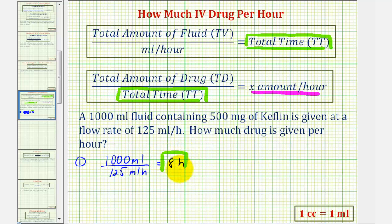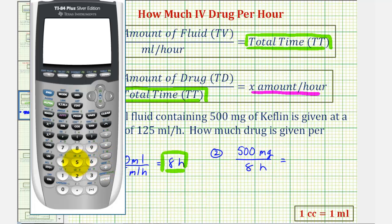And now that we have the total time, we can determine the amount of the drug given per hour. We'll take the total amount of drug in milligrams, which is 500 milligrams, and divide by the total time in hours, which we now know is 8 hours. This quotient will tell us the number of milligrams per hour. So if we're allowed to use a calculator, we can just take 500 and divide by 8. So the amount of drug given is 62.5 milligrams per hour.